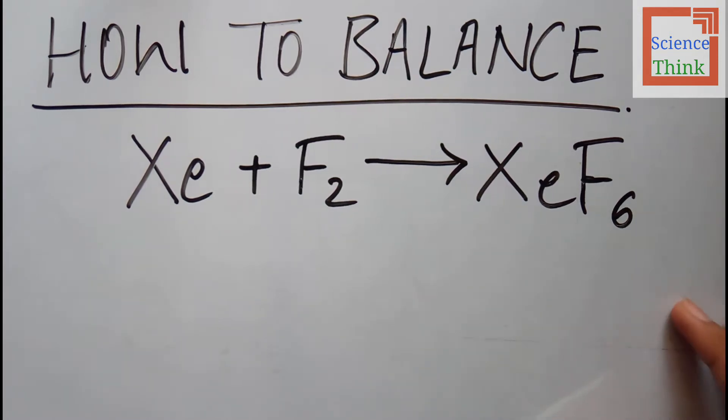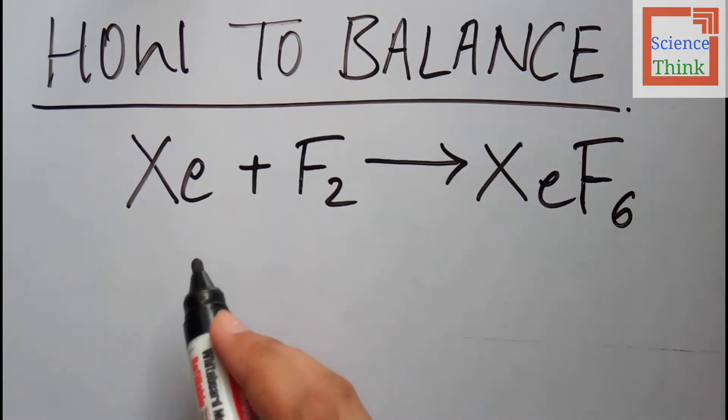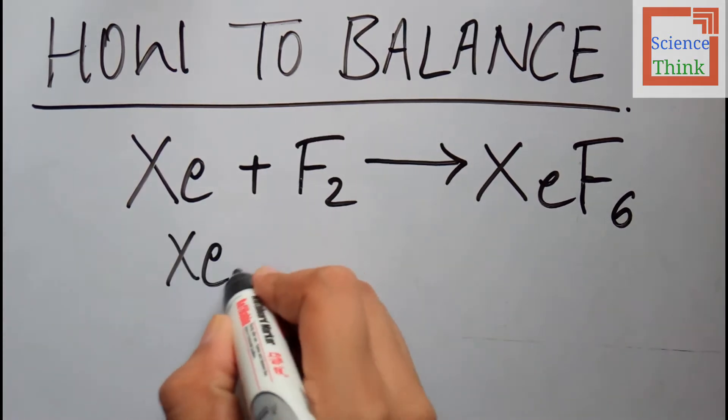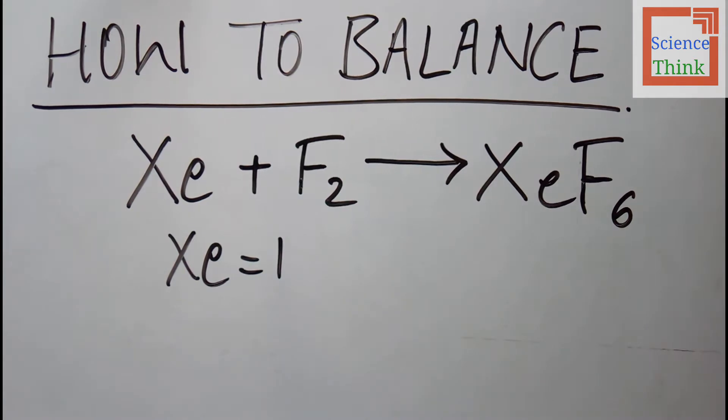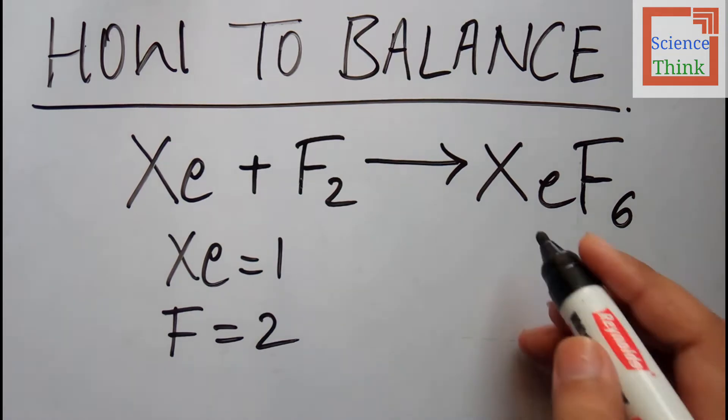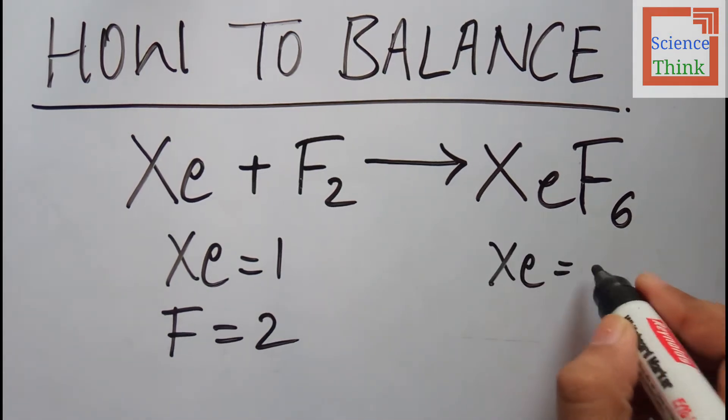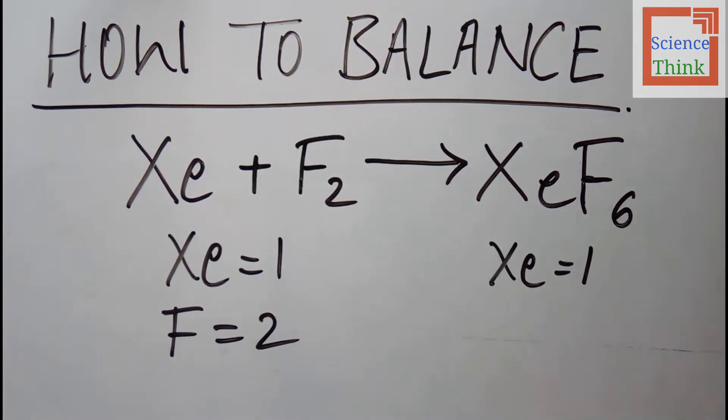Let's start balancing. On the reactant side we have one xenon atom, two fluorine atoms. On the product side we have one xenon atom and six fluorine atoms.